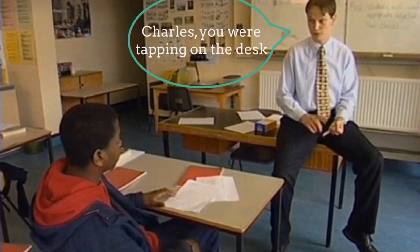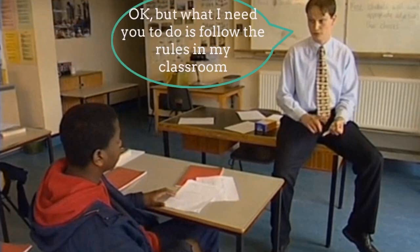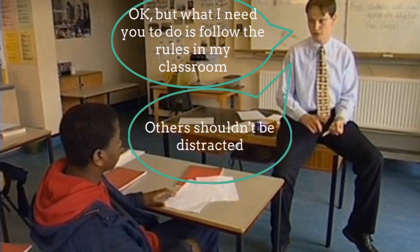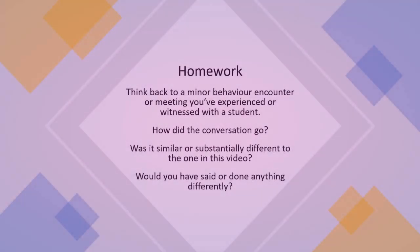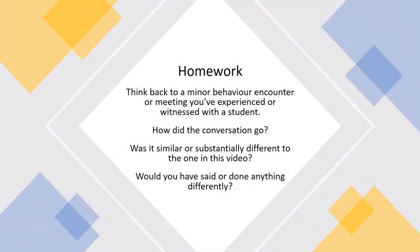The teacher stated what happened, then the student denied it was him, but instead of provoking an argument, the teacher stayed focused on the desired behaviour, explained why, and then ended on a positive way forward for both. For homework, think back to a minor behaviour encounter or meeting you've experienced or witnessed with a student. How did the conversation go? Was it similar or substantially different to the one in this video? Would you have said or done anything differently?